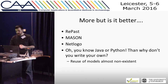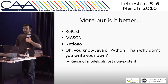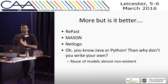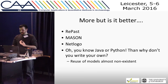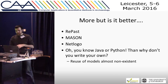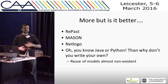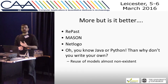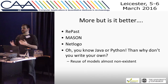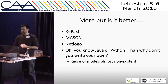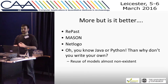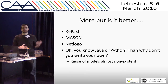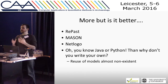But is that actually a good thing? There are certain programs we use — Repass, Mason, NetLogo — these are the three main programs for agent-based modeling.